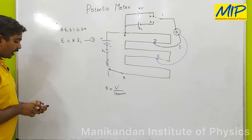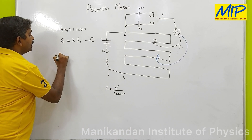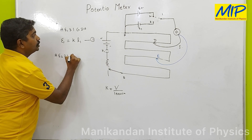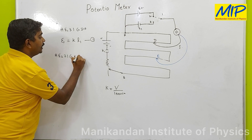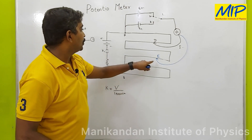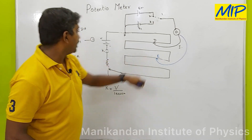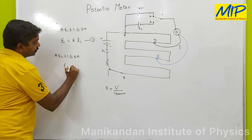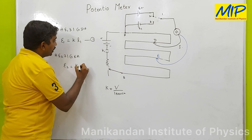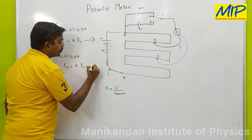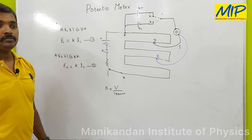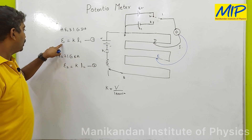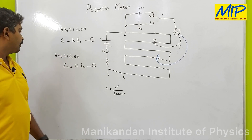When the jockey is placed at E, I get zero deflection in the galvanometer, which means the length from A to E is balanced by the potential drop due to E2. For the loop A–E2–2–1–G–E–A, the EMF of E2 equals the potential drop per unit length times L2: E2 = K × L2. This is equation 2.